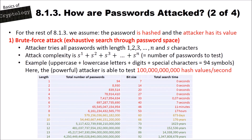Now let's look at attacks on hashed passwords, assuming the attacker has the hash value. The first attack is a brute-force attack — an exhaustive search through the password space. The attacker tries all passwords of length 1, 2, 3, up to a specified length n, using s different characters at each position. The total number of passwords to test is s¹ + s² + s³ + … + sⁿ.